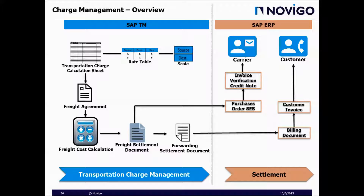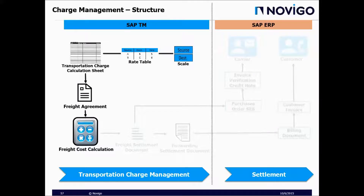This flowchart belongs to the last step or the last component of SAP Transportation Management, which is transportation charge management and settlement. As you can see, it requires integration of SAP TM and SAP ERP. It starts with freight cost calculation and it can be finished in many different ways. This process can be pretty complicated and we'll try to explore it as much as possible.